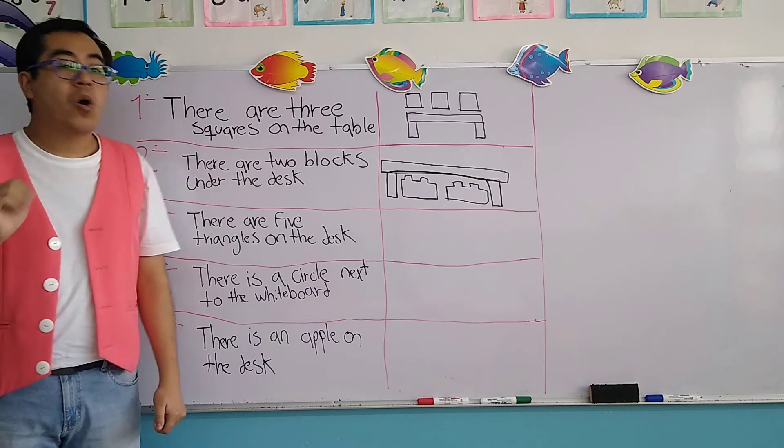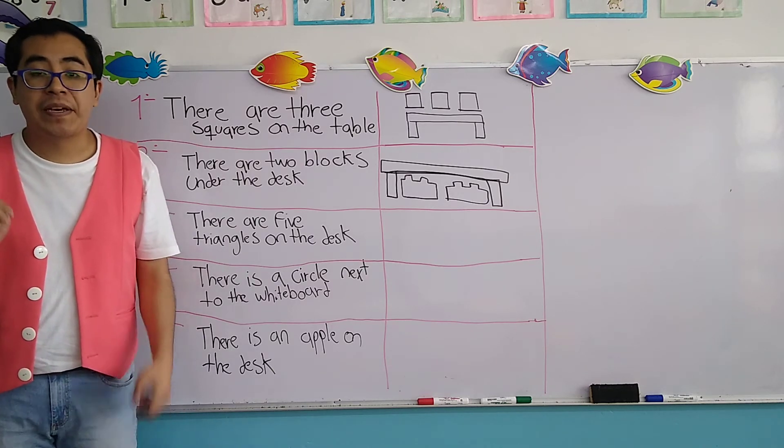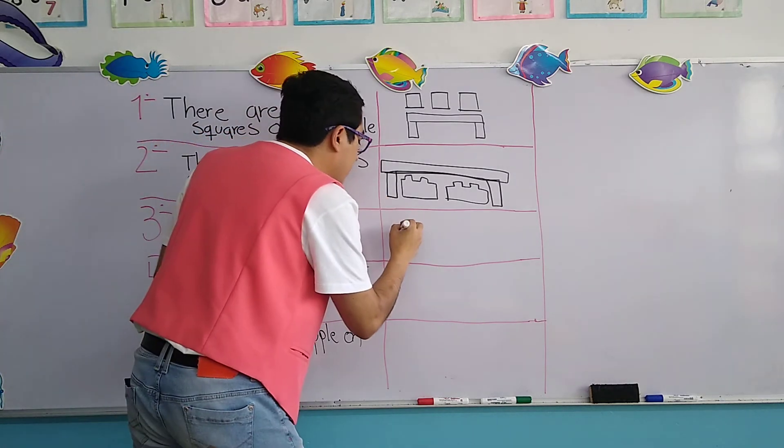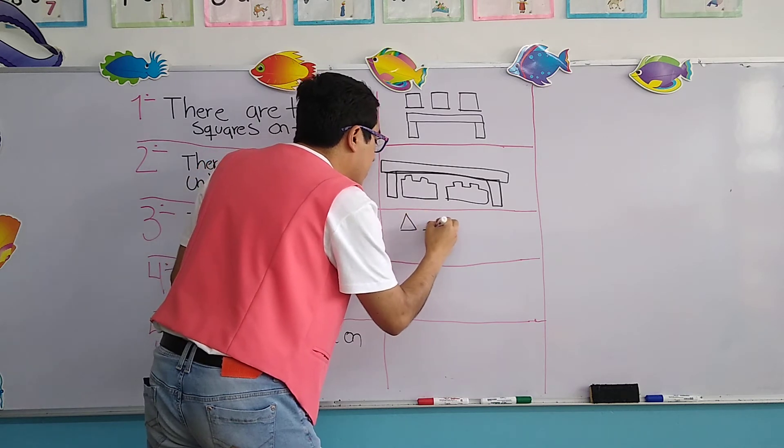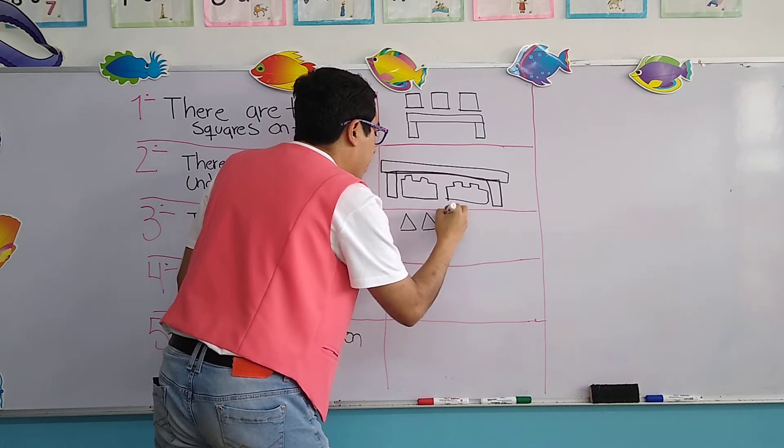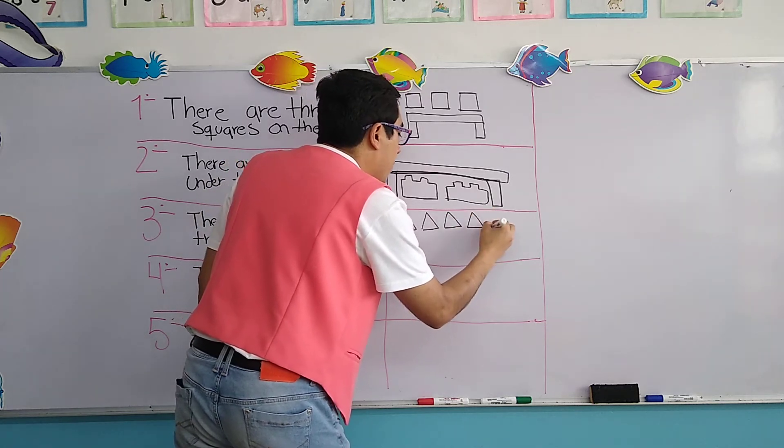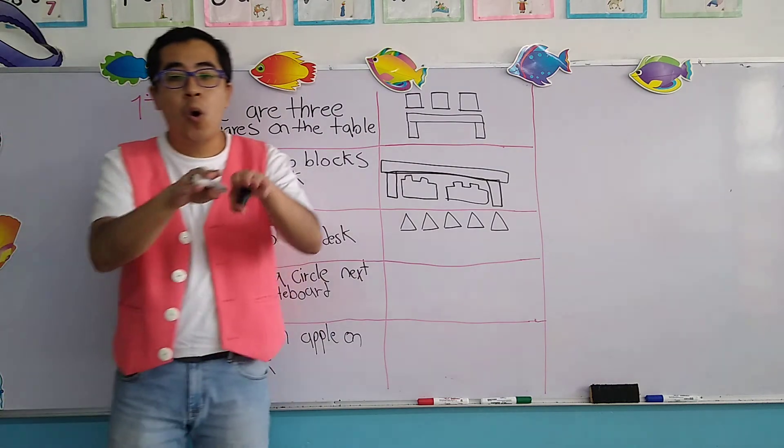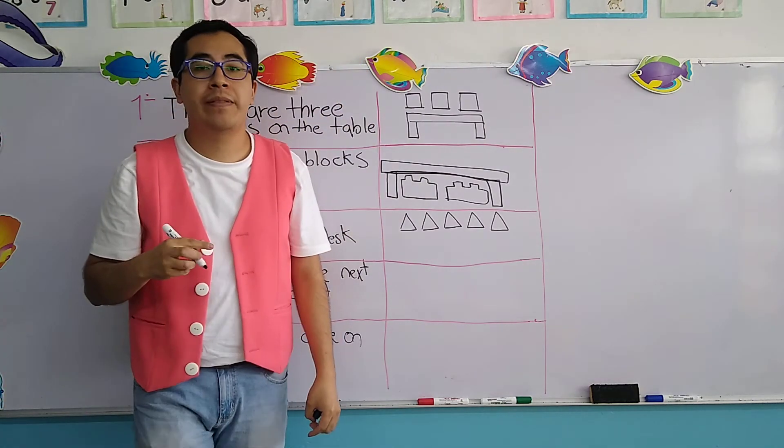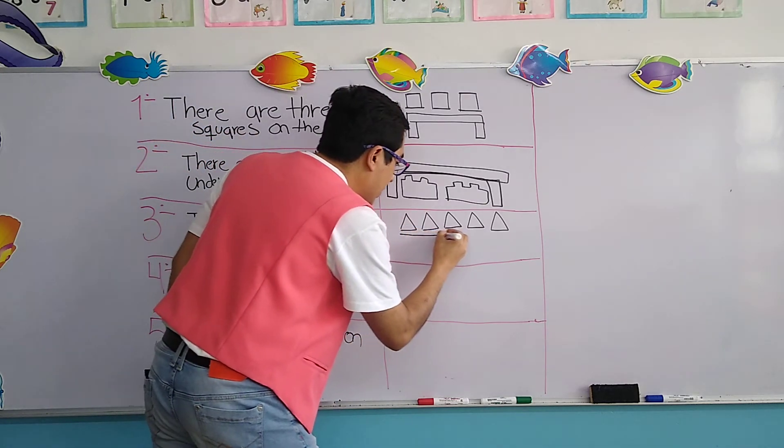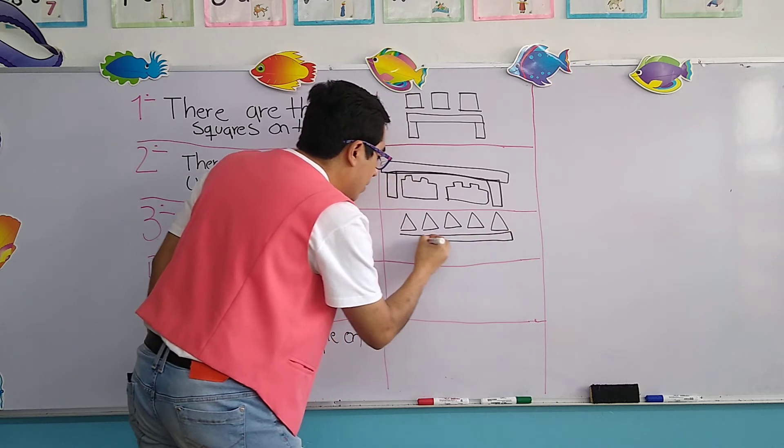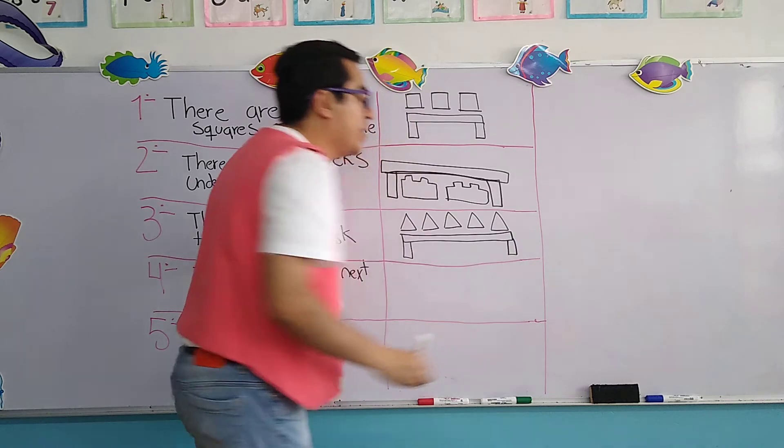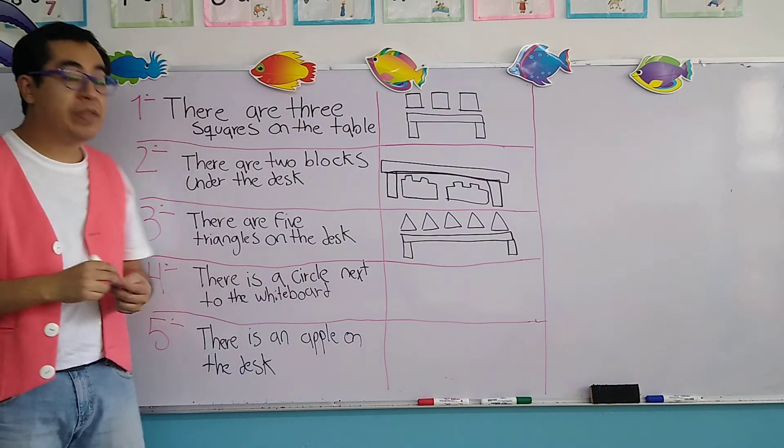The desk is like a table, similar to a table. Let's continue with the third sentence. There are five triangles on the desk. So, using geometric shapes, five triangles. One, two, three, four, five. Now, these triangles are on, arriba, on the desk. Desk is like a table. In Spanish, escritorio. Five triangles on the table. Very good.